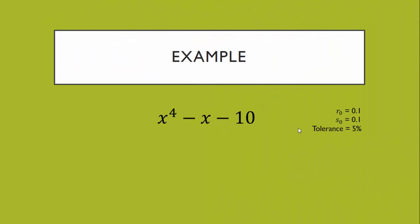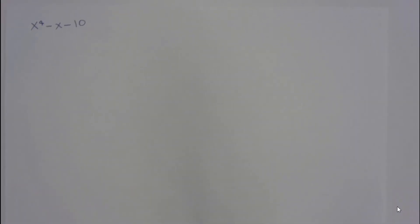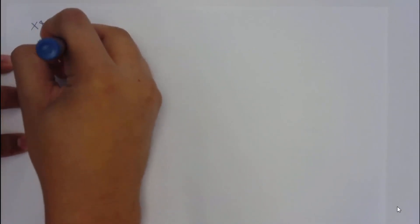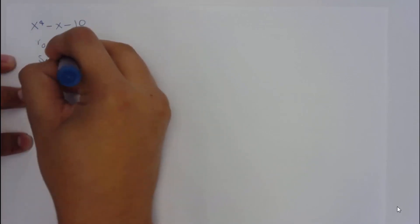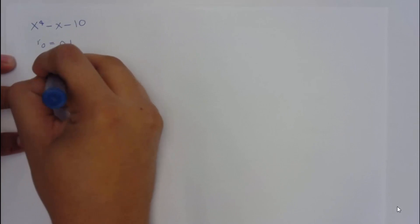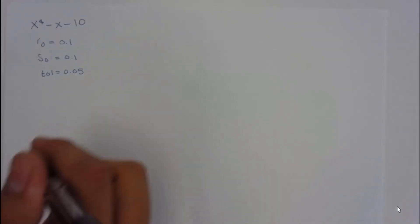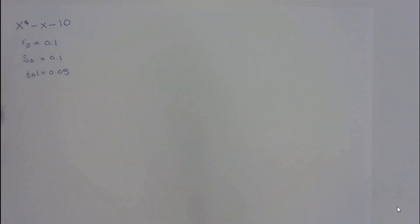Now, the example. For this example, I chose x to the 4th minus x minus 10, with initial values of r and s to be 0.1, and a tolerance of 5%. If you are not giving any initial values, you can guess them yourself. So, for this problem, x to the 4th minus x minus 10, we have an initial guess of r of 0.1, and an initial guess of s of 0.1, with a tolerant value of 0.05. To be honest, this example is going to take very long because the initial guesses aren't as good. So, it's going to take many iterations. I'm just going to show you how to do the first one.